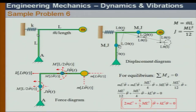For this bar: by D'Alembert's principle, I consider a lumped mass at the center. That lumped mass translates by L/2 times theta. Therefore the inertia force is M times L/2 times theta double dot — that is my translational inertia force.